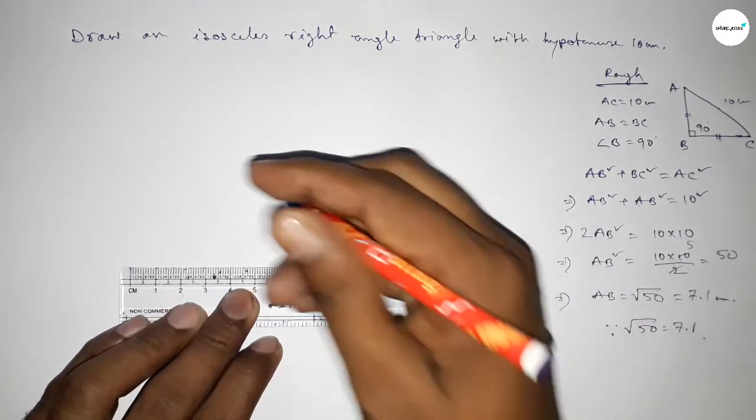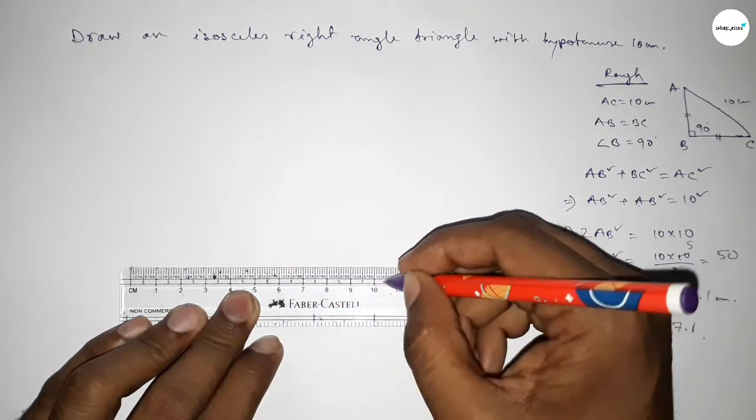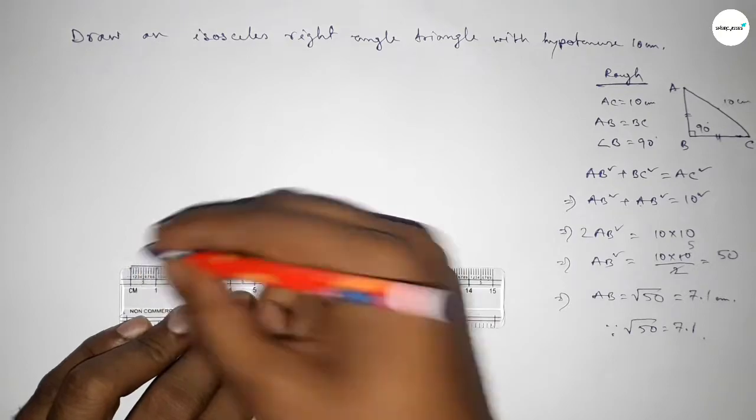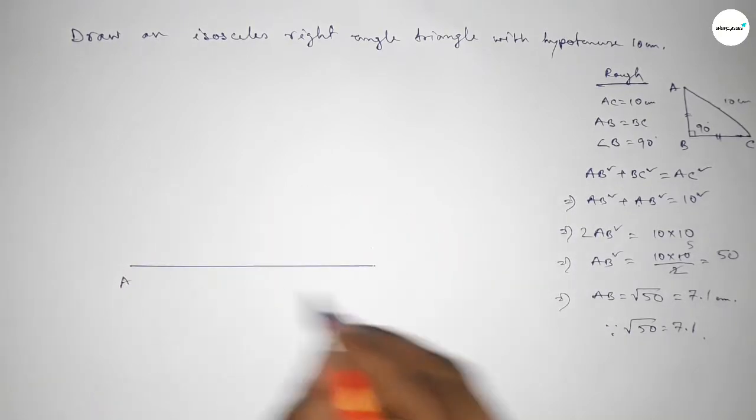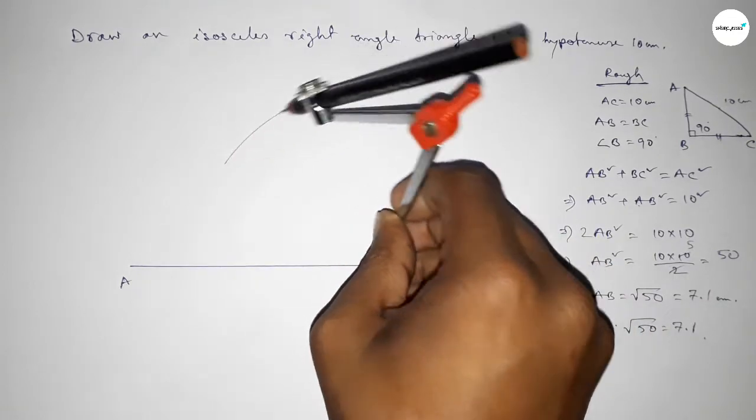Now constructing the isosceles right angle triangle. So first drawing here a line of length 10 centimeter and taking here point A and here C. Now we have to bisect this line, so taking greater than half of AC.